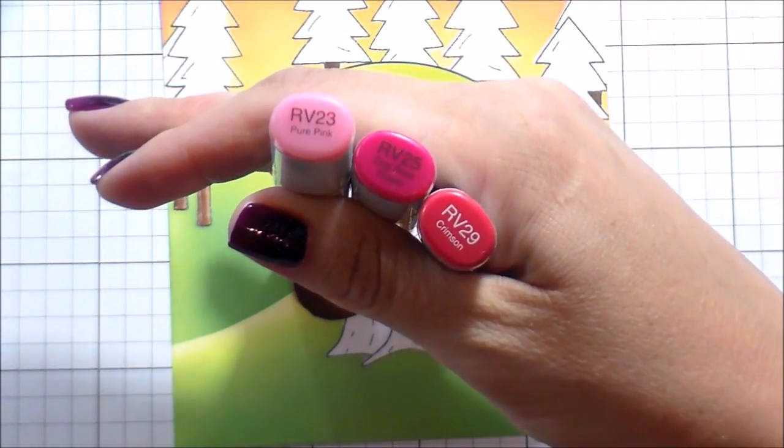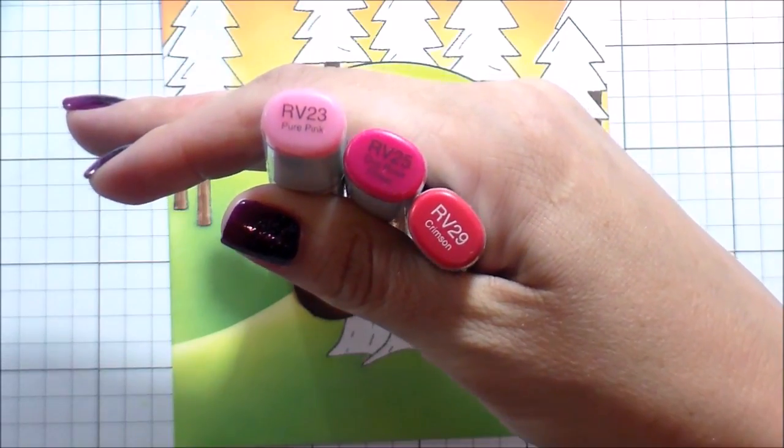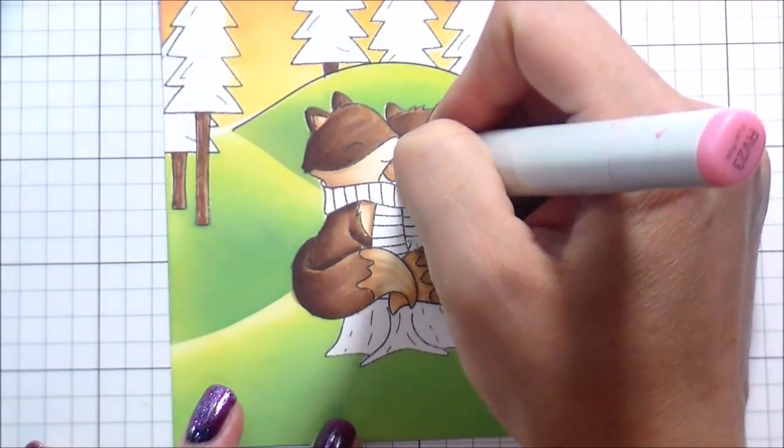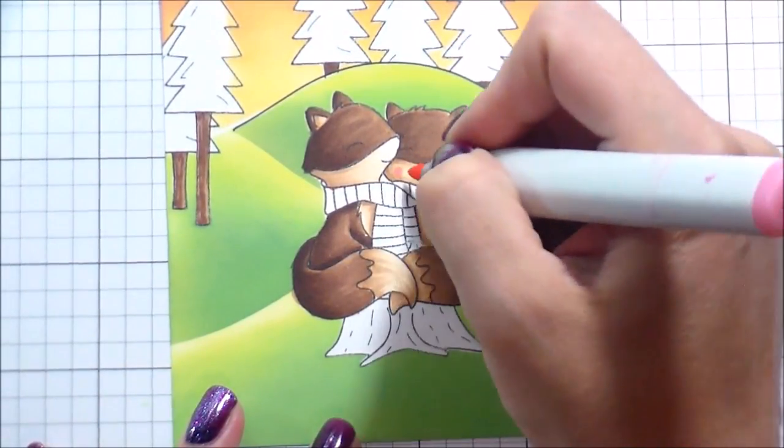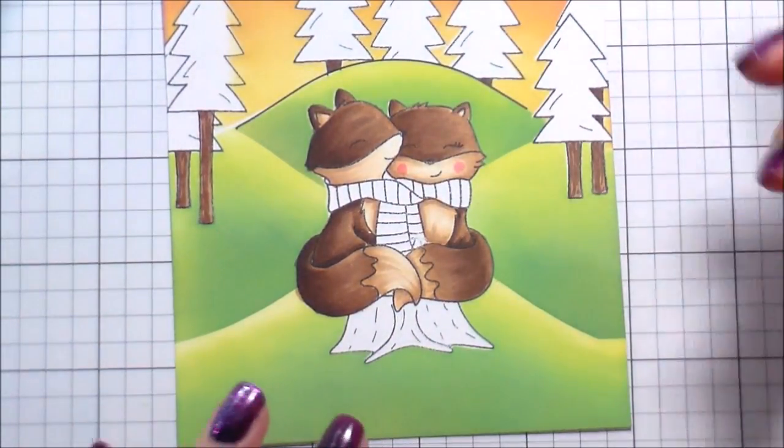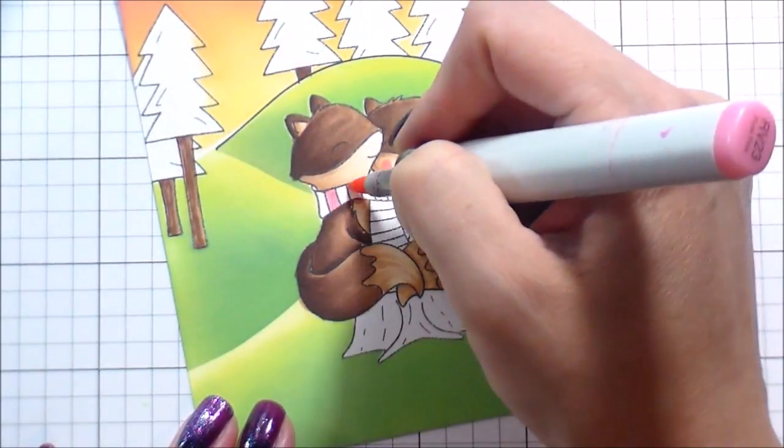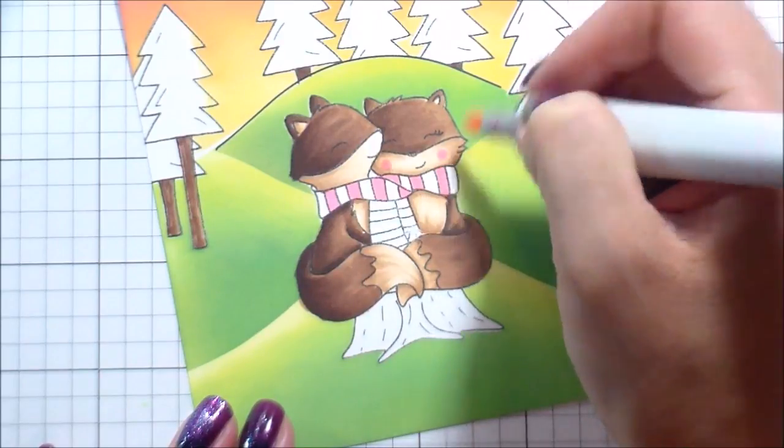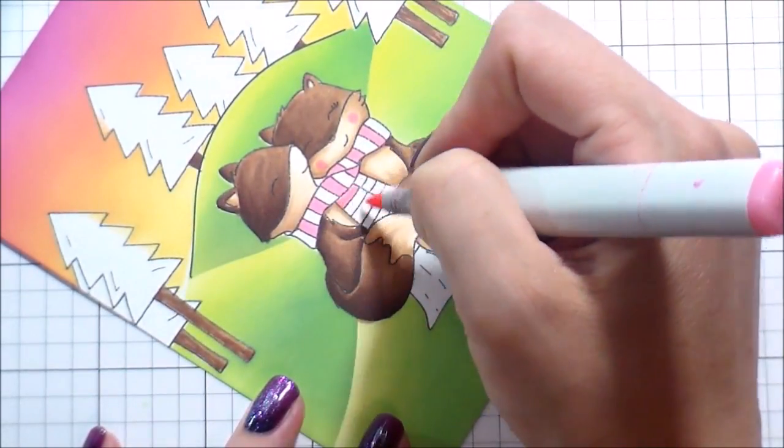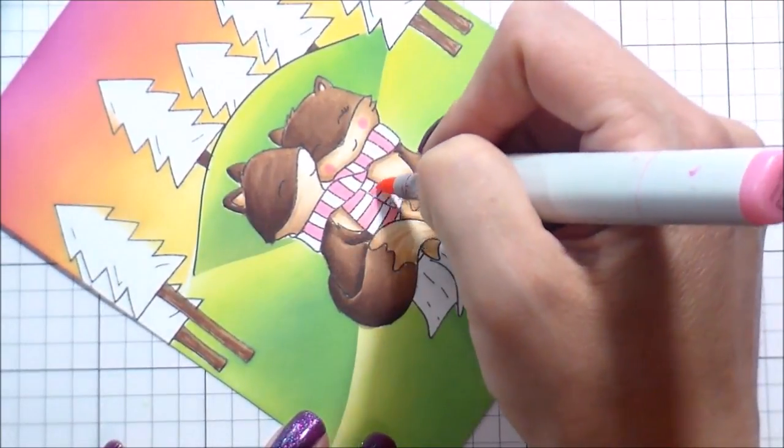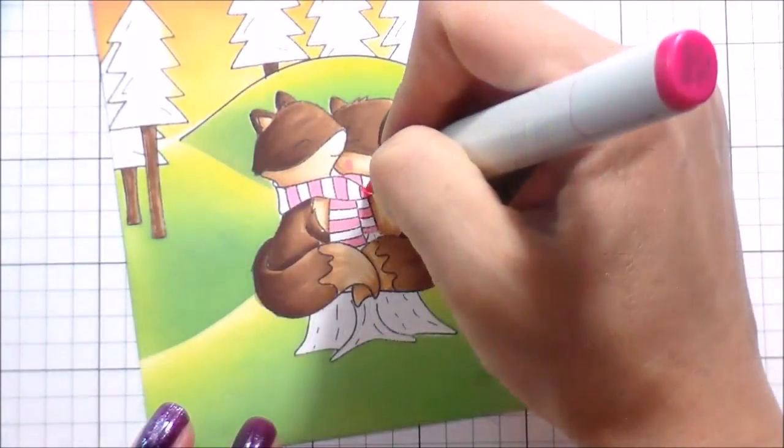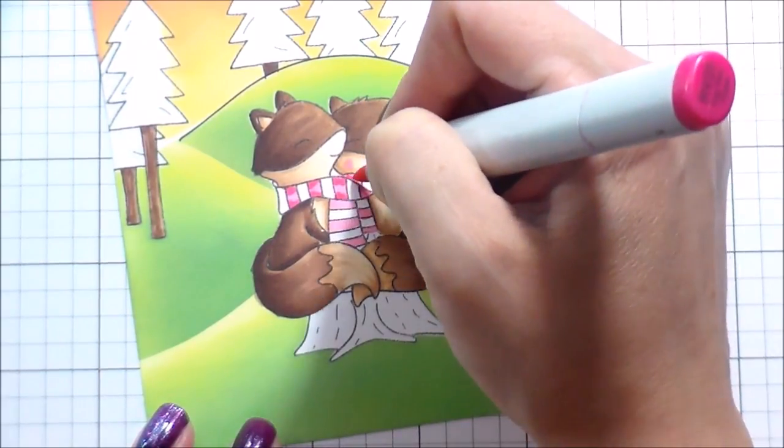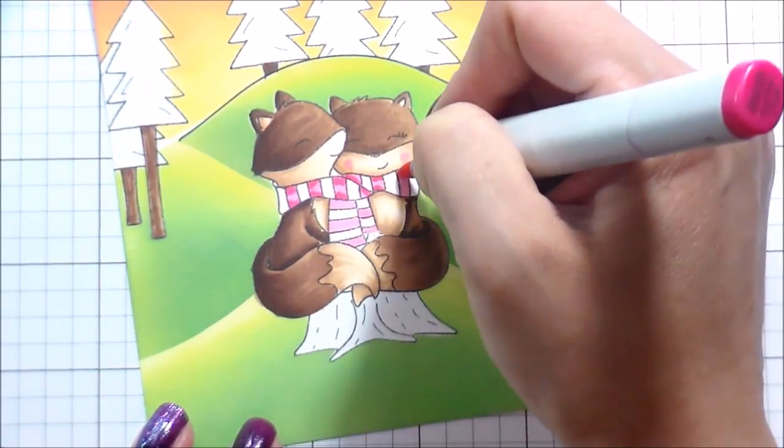Again, using the... oh no, we're not going to do the stump yet. I'm lying. I'm jumping ahead. So I picked some, this is different than my regular RV family. I just added a little bit of that lightest color, that RV 23 to her cheeks to make her a little bit more ladylike, even though she has the eyelashes. And then I'm going to color every other stripe in this scarf. I couldn't even think of the word. It's a scarf. Anyway.